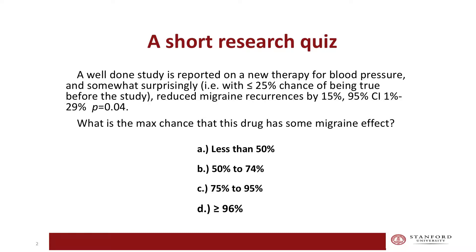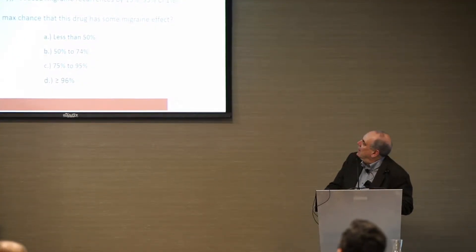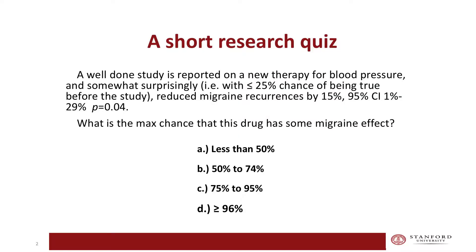It was surprising in that beforehand they didn't really suspect this. We can say it would have less than a one in four chance of being true. Now that you've seen this evidence with this 15% reduction in migraine recurrence, what's the maximum chance that this drug has some migraine effect? The four possible answers are: less than 50%, 50 to 74%, 75 to 95%, and 96% or above.